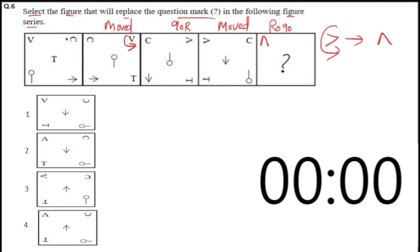If you look at C: C in the first figure is on the right. Then in the second figure, it moved to the left. Then in the third figure, it rotated 90 degrees and stayed in the same place — from second to third, it rotated 90 degrees. Again, in the fourth figure, it shifted its position from left to right. That means in the fifth figure, it will rotate 90 degrees and stay in the same place.